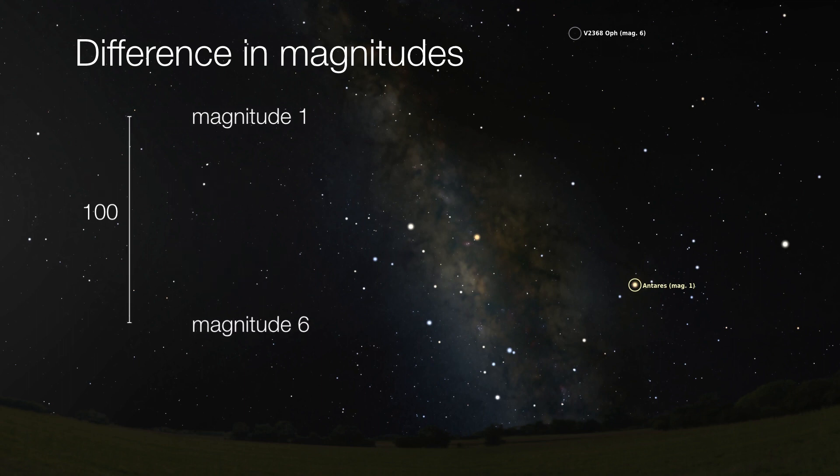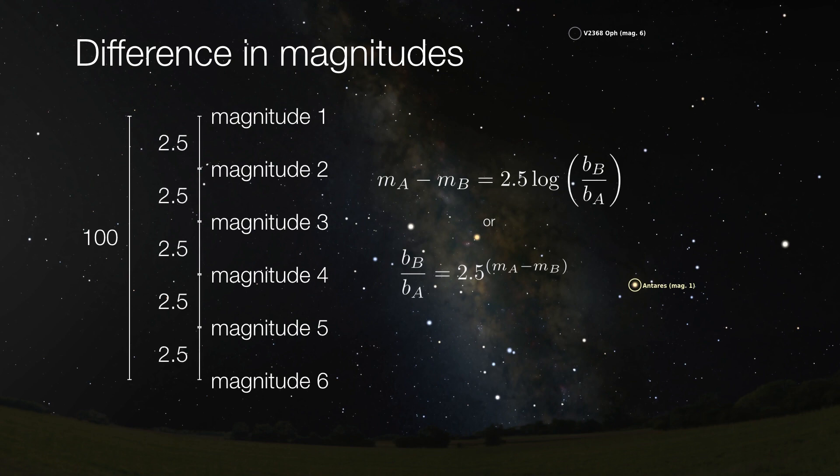So to fit that into the magnitude scale, each step in magnitude represents a two and a half factor in brightness difference. In other words, a magnitude two star is two and a half times fainter than a magnitude one star, and a magnitude three star is two and a half times fainter than a magnitude two star, and so on.